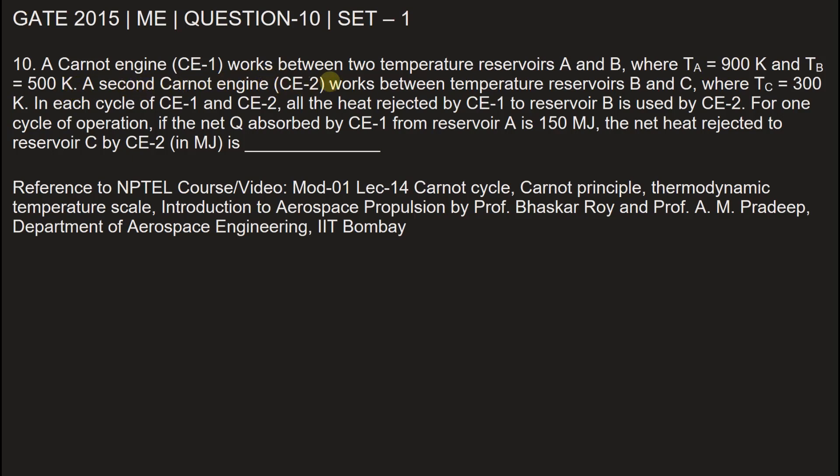A second Carnot engine CE2 works between temperature reservoirs B and C where TC is equal to 300 Kelvin. In each of CE1 and CE2, all the heat rejected by CE1 to reservoir B is used by CE2.